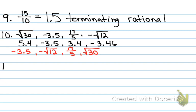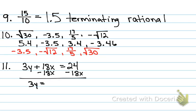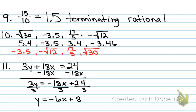Number 11 is a review question. Write this equation in slope-intercept form. First, subtract 18x because I need to solve for y — subtract 18x to the other side. Now I get 3y equals negative 18x plus 24. Then divide everything by 3. The answer is y equals negative 6x plus 8. That's one question on your test and it's worth 5 points.